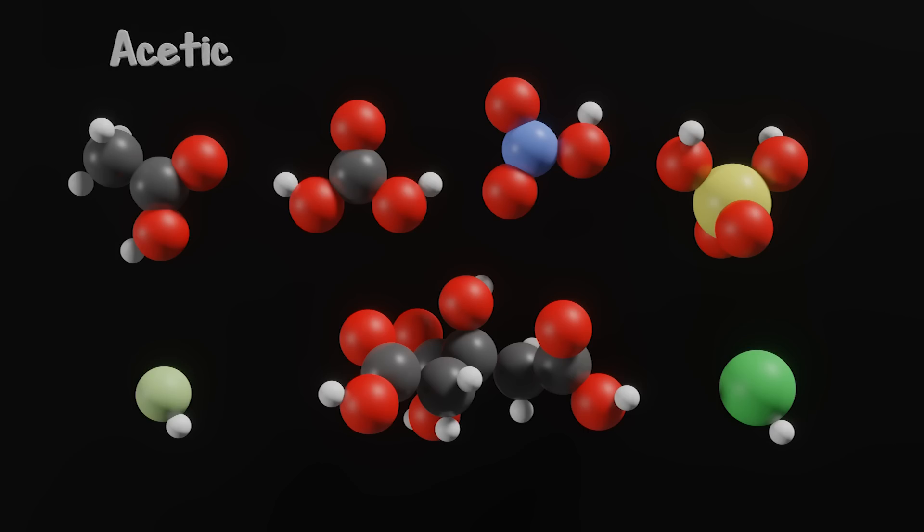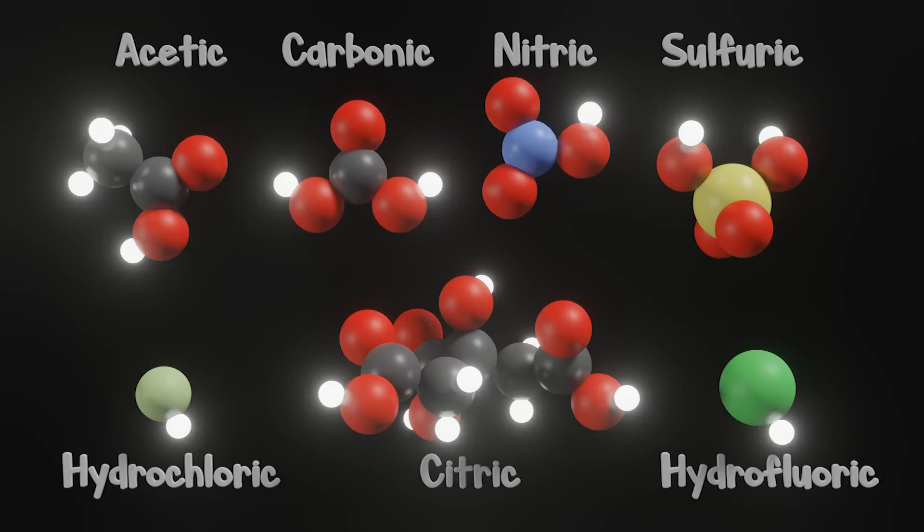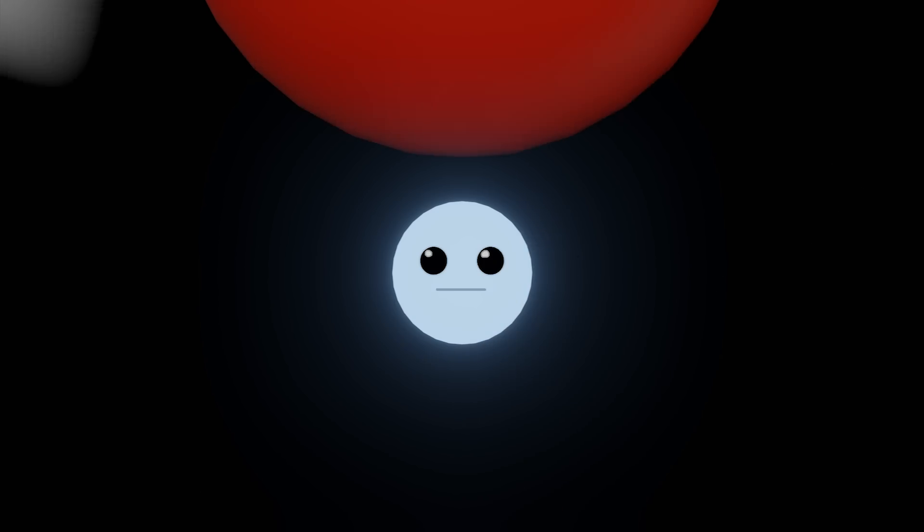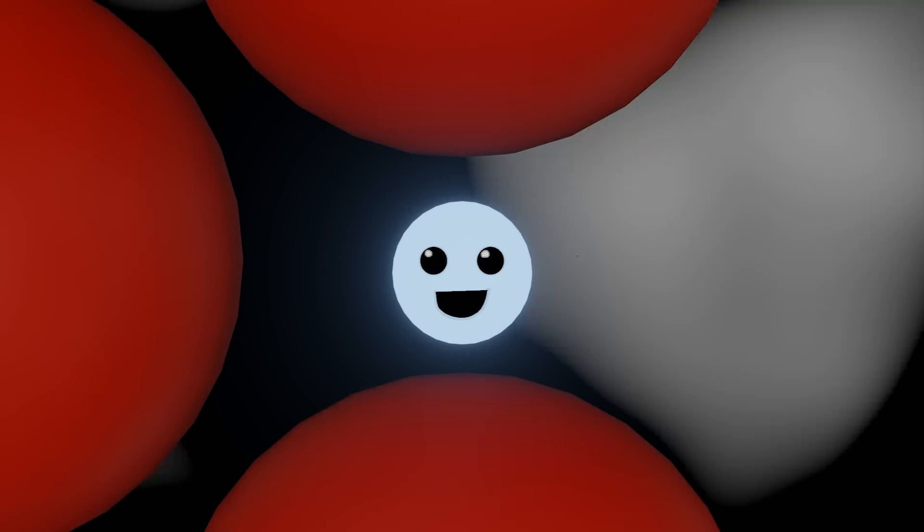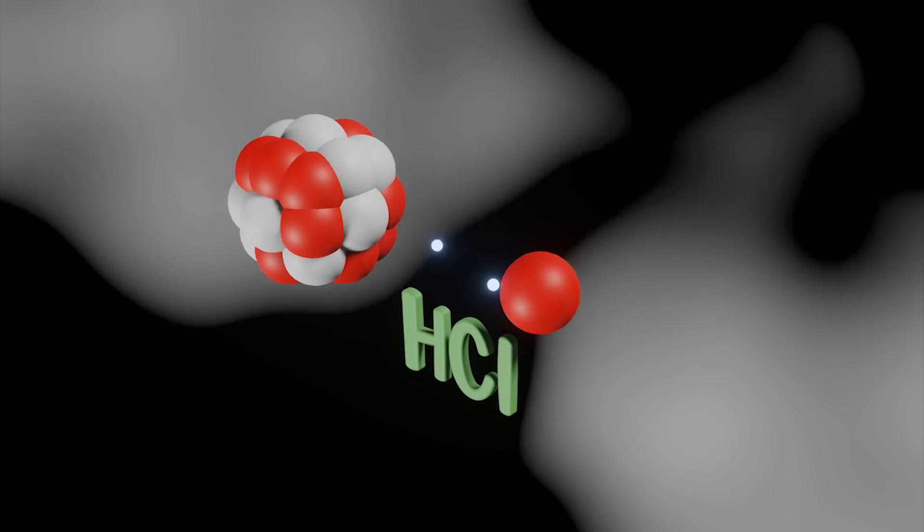If we look at the most common or abundant acids, we see a trend: a hydrogen atom bonded to an electronegative atom. Now remember, electrons want to be as close to as many protons as they can be. That's how we form the most stable molecule.